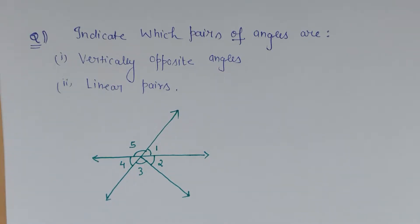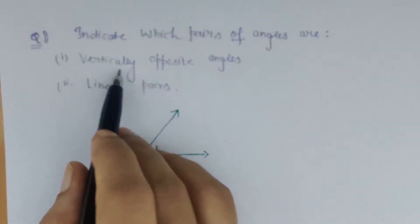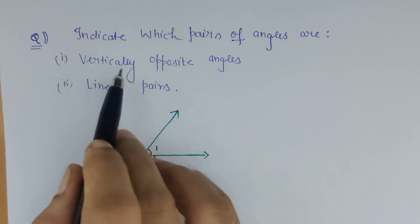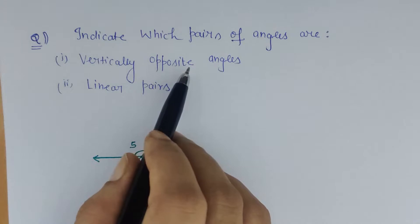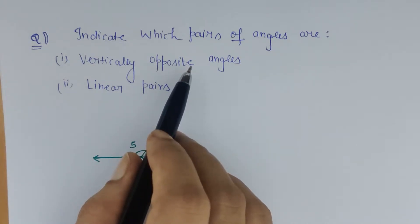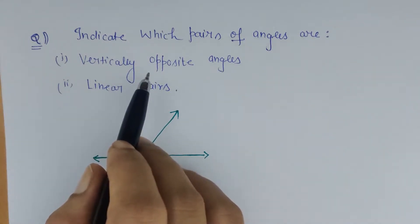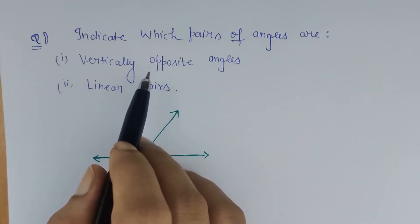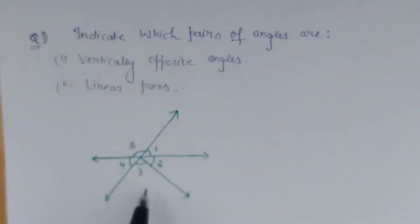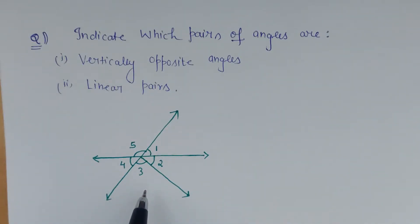Hello friends, welcome back. Here let's see a Class 7 problem which says: indicate which pair of angles are vertically opposite angles. Vertically opposite angles are formed when two straight lines intersect each other.